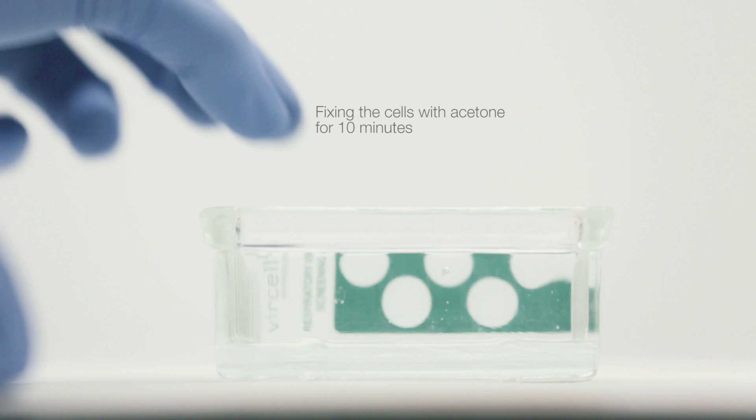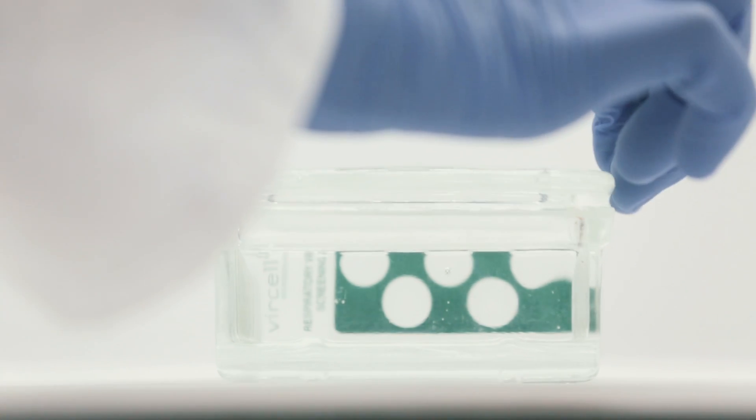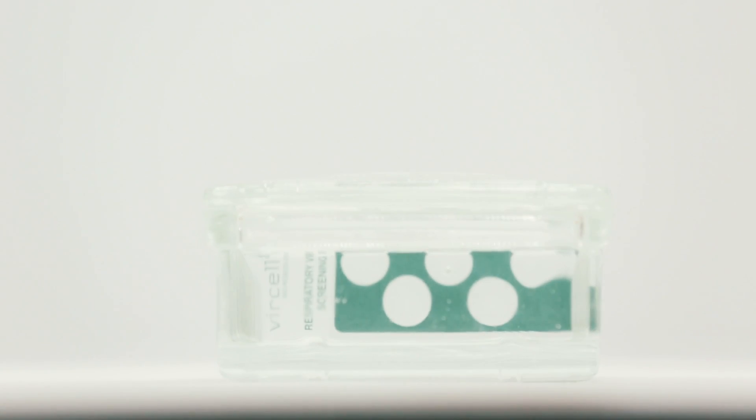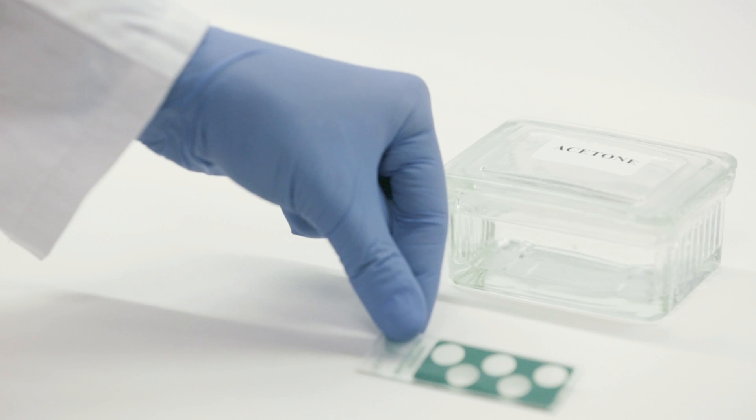Let the slide air dry at room temperature or use a hair dryer to accelerate the process. Fix the cells by introducing the slide in an acetone bath for 10 minutes at room temperature. Take the slide out of the acetone bath and let it dry completely.